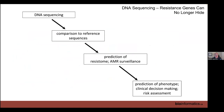The metaphor for how we annotate resistomes is simple: we perform DNA sequencing, choose our sequencing platform, and compare sequence data to reference sequences of known AMR. This leads to prediction of the resistome — the catalog of genes and mutations that confer resistance — which is the tool of AMR surveillance. The holy grail is whether we can take those lists of genes and mutations and actually predict bacterial phenotype, enabling risk assessment and clinical decision making.